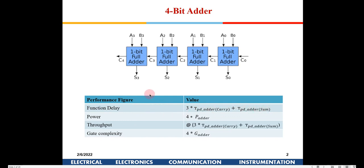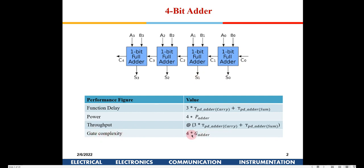Power equals the power of four adders. Throughput is the rate at which valid data comes out — it is the inverse of the functional delay. After the full propagation delay, one valid output is available. Gate complexity indicates roughly how many modules are used, which gives a rough indication of area. In this case there are four adder blocks required, so gate complexity equals four adder units.